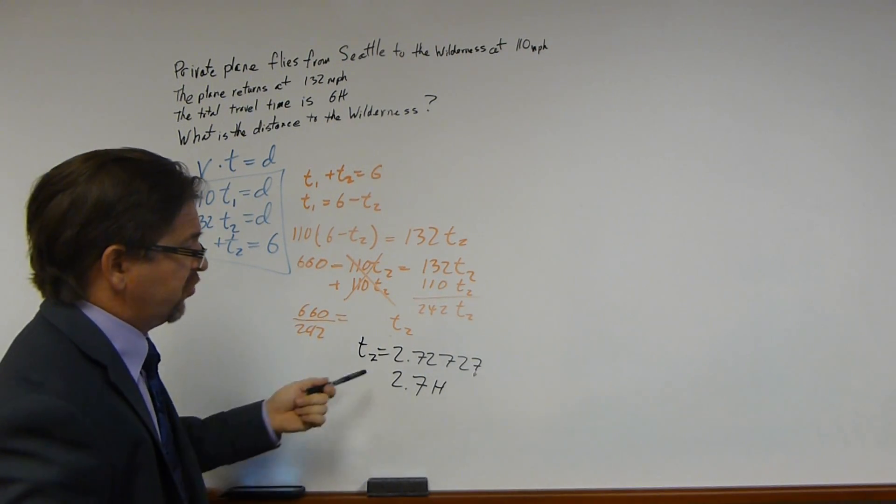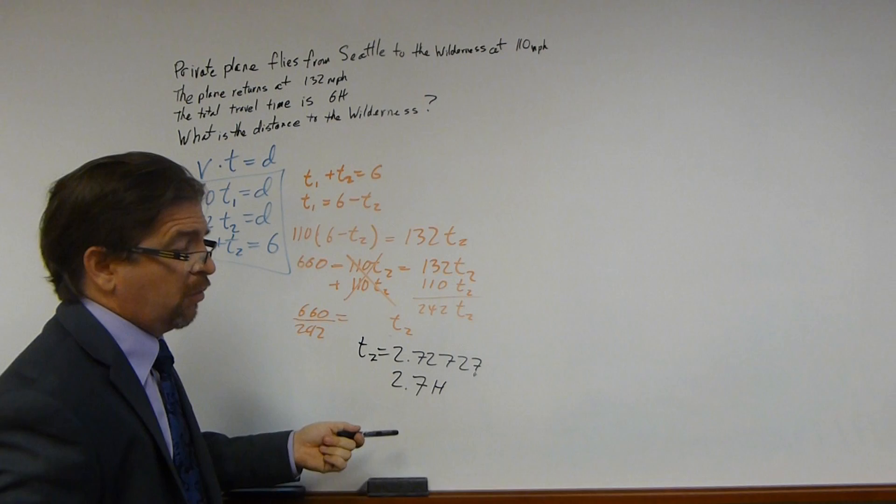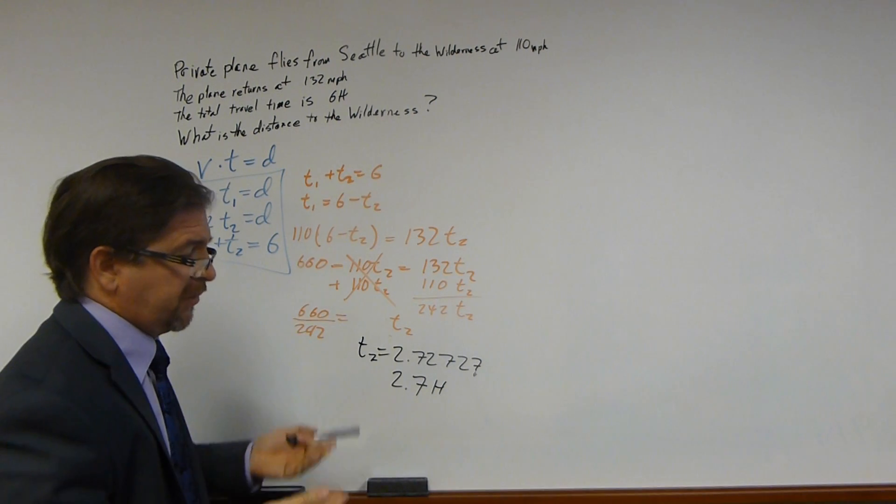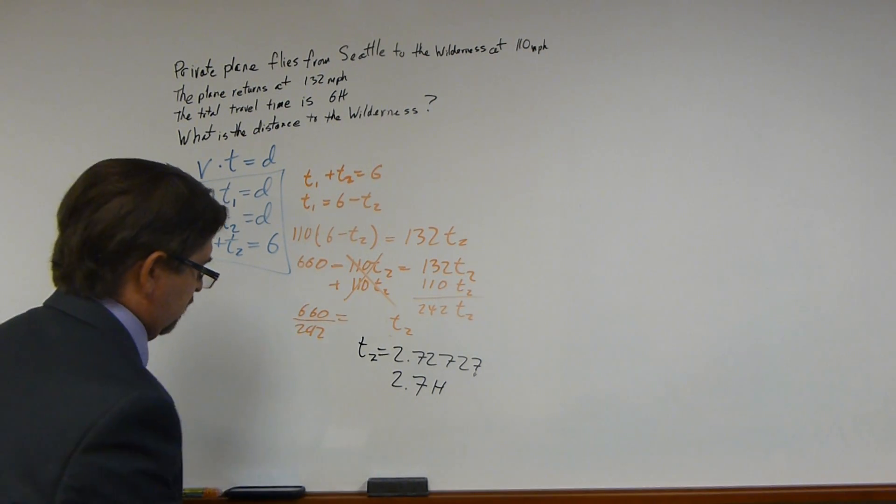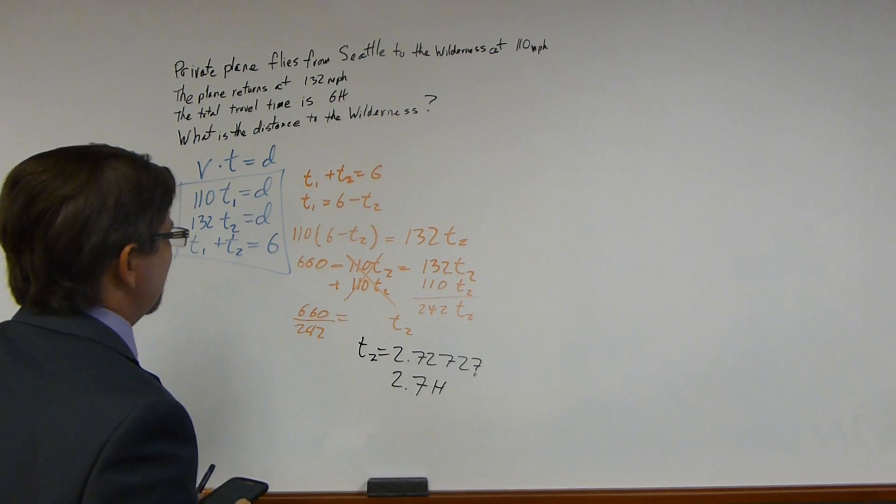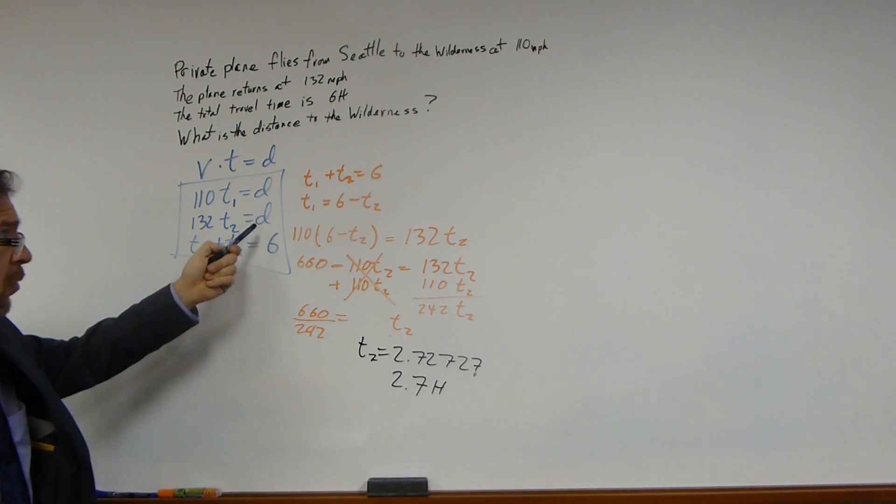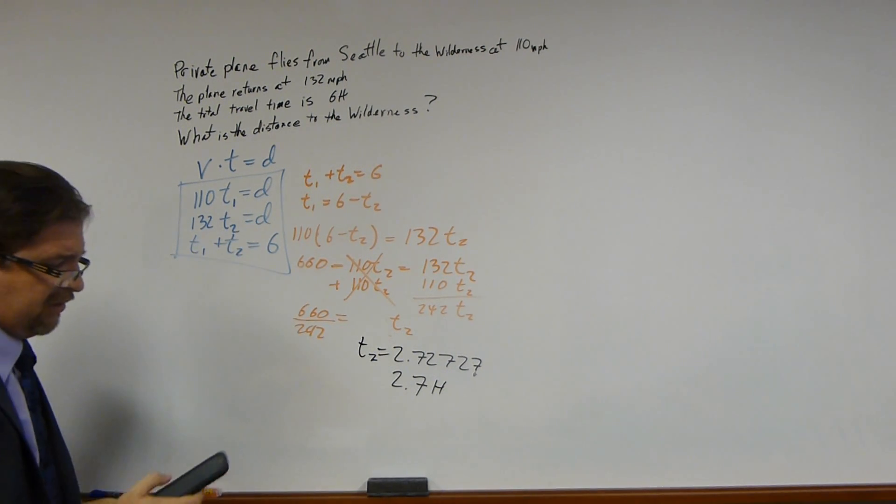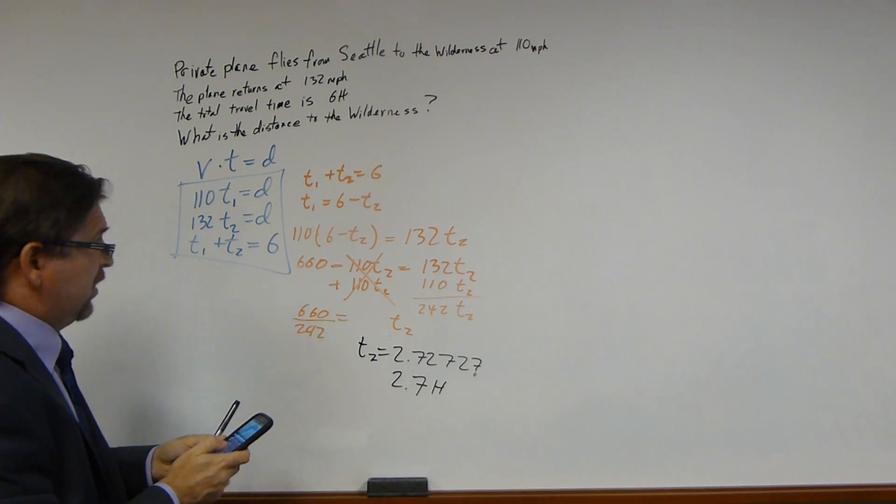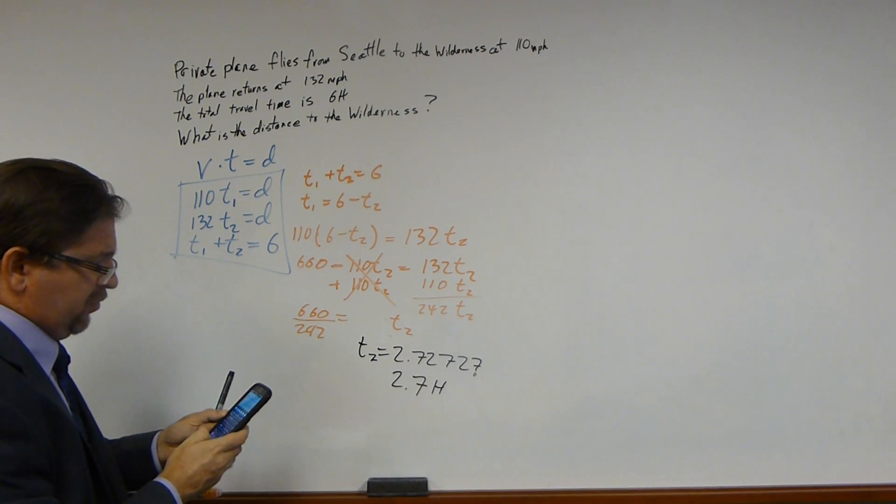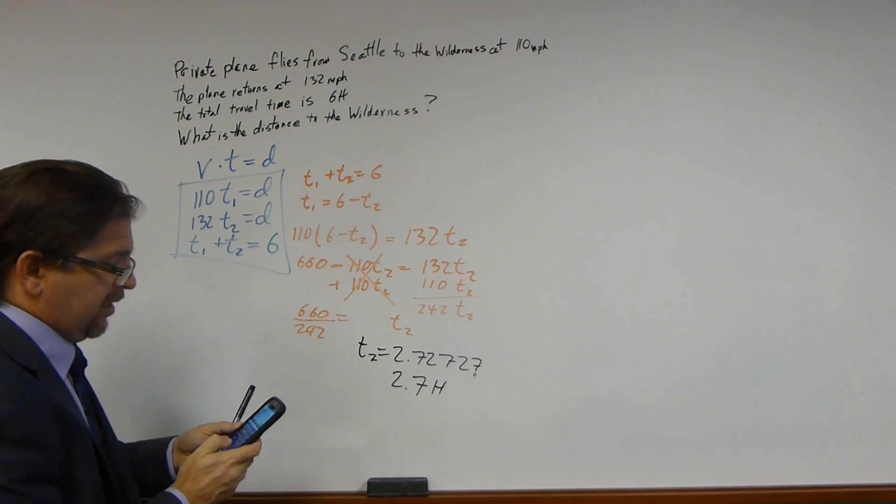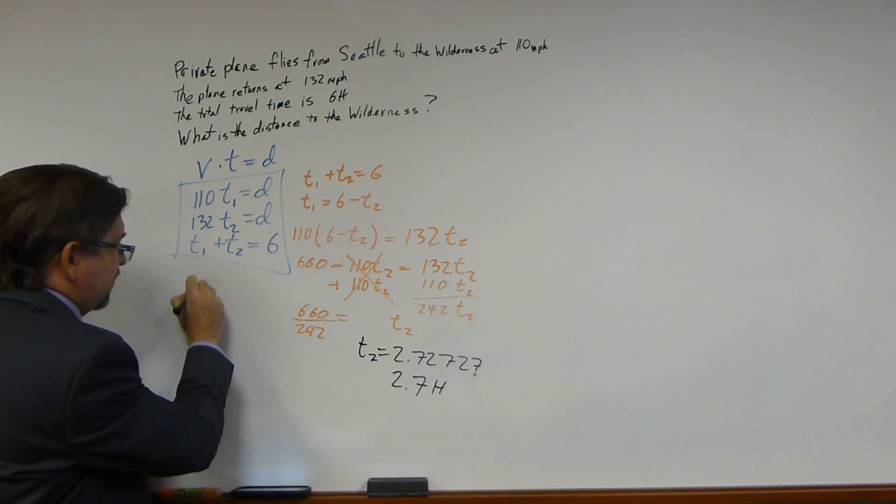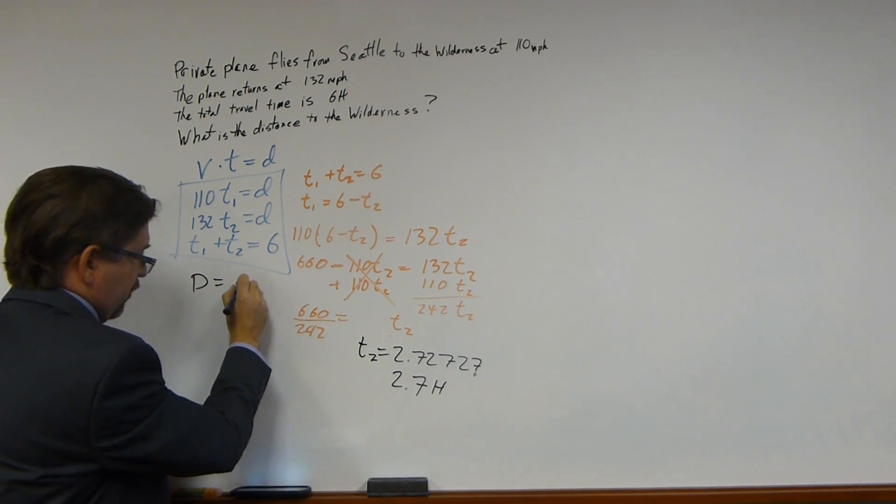Now I'm just putting this here to give you an idea of what it is. When I actually do the calculation for the distance, I'm going to use this number. Because when I'm still doing calculations, I do not round until the end. So I'm going to take this number. Distance, which we're actually solving for, 132 times T2 gives us distance. So let's take this number and multiply times 132. We get, oh, that turns out nice. Nice, pretty number. We get a distance of 360.